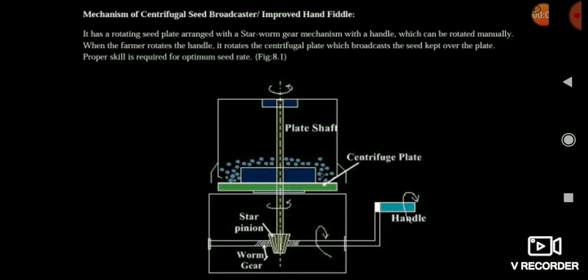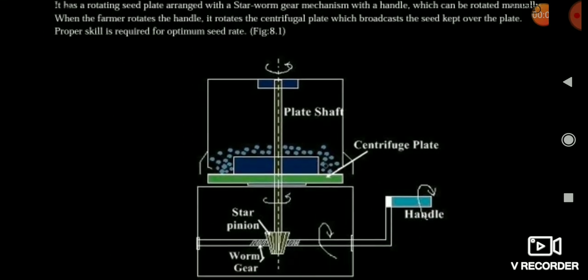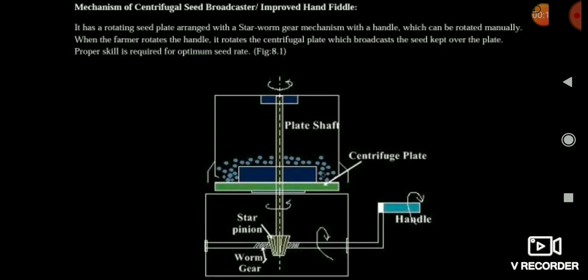Here you can see the hand-operated broadcaster, also called a sheet broadcaster. When you rotate the handle, it rotates the worm gear. The worm gear is connected to the star pinion, so the worm gear provides motion to the star pinion. After the star pinion, it is connected to the blade shaft, so the blade shaft starts rotating. The seeds are present on the centrifuge plate, and due to this rotation, the seeds are broadcasted.